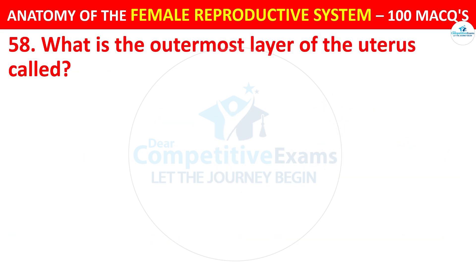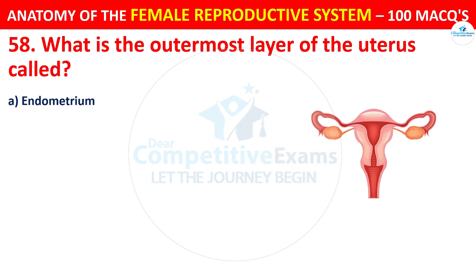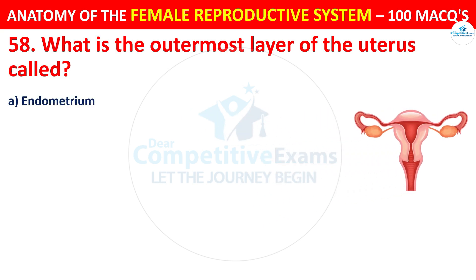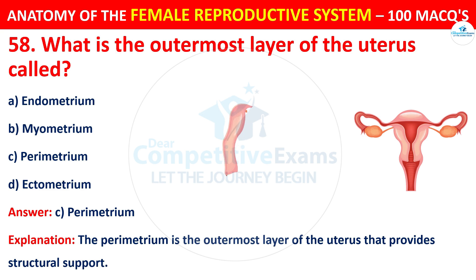Question number 58. What is the outermost layer of the uterus called? Options: endometrium, myometrium, perimetrium, or ectometrium. The correct answer is C — the perimetrium. The perimetrium is the outermost layer of the uterus that provides structural support.